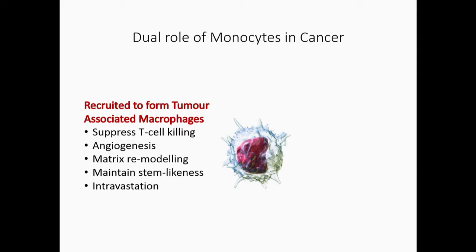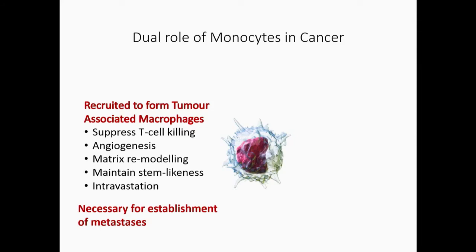More recently, our lab have shown that they're actually necessary for the establishment of metastases. And this is not actually what we call a metastases-associated macrophage, but a pre-macrophage, an early kind of monocyte-differentiated cell that if we block, we can actually prevent metastatic seeding. So really key in terms of trying to solve what actually kills our patients in terms of metastases.